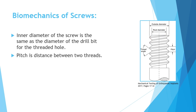If you say 6.5, that means the outer diameter is 6.5. The inner diameter, or root diameter, is the diameter of the screw without the threads, and this diameter equals the diameter of the drill bit we use to put the screw in the threaded hole. So most 3.5 screws will have an inner diameter of 2.5, which will be the same size as the drill bit used to make the threaded hole.